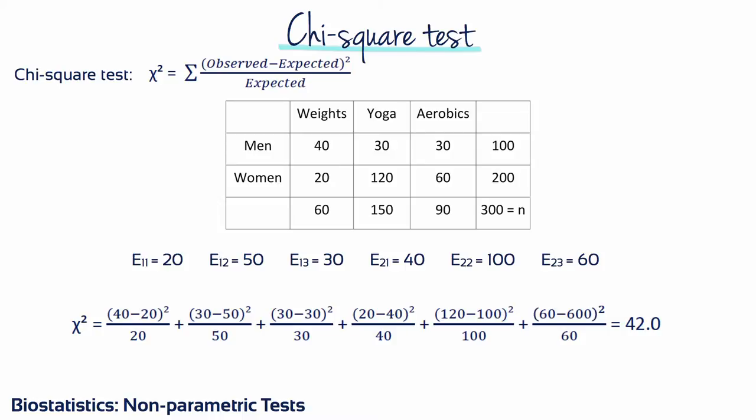If the variables are truly independent, the expected cell frequencies should be close to the observed cell frequencies. If the variables are dependent, there will be large differences between the observed and expected frequencies. The chi-square statistic involves calculating the difference between the observed and expected frequencies. For each cell, the difference is first squared, and this squared difference is then divided by the expected cell size — so that large cell sizes do not have undue influence. These adjusted squared differences are summed across all cells to arrive at the chi-square value. The larger the chi-square value, the stronger the evidence for an association.